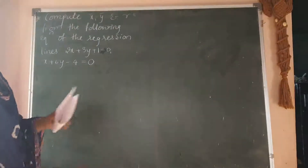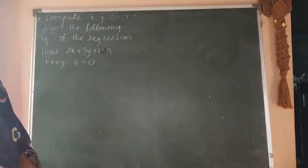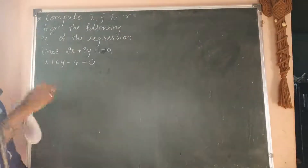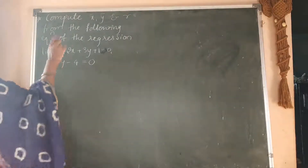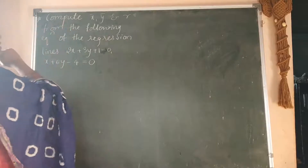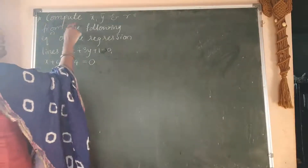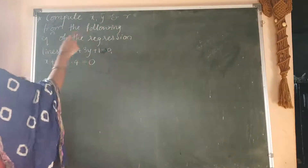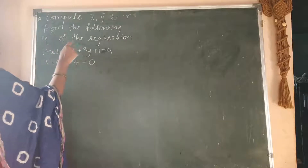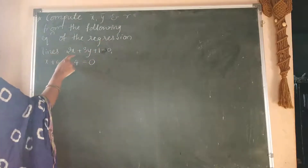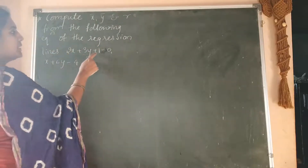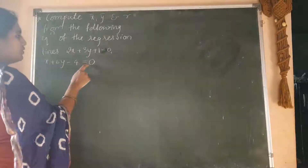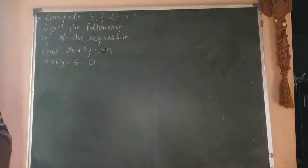Hello students, let us start the next part of regression model 3. Here let us start the example. Compute x bar, y bar and r from the following equations of the regression lines: 2x plus 3y plus 1 equals to 0, and x plus 6y minus 4 equals to 0.